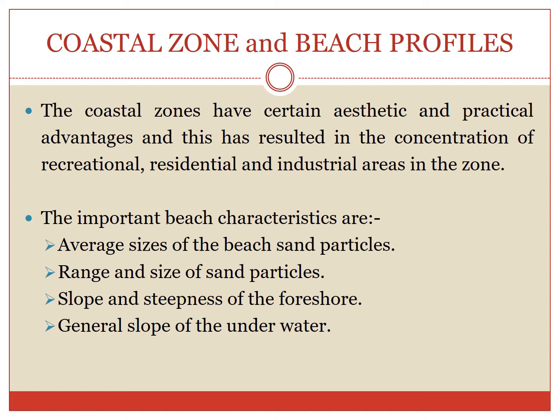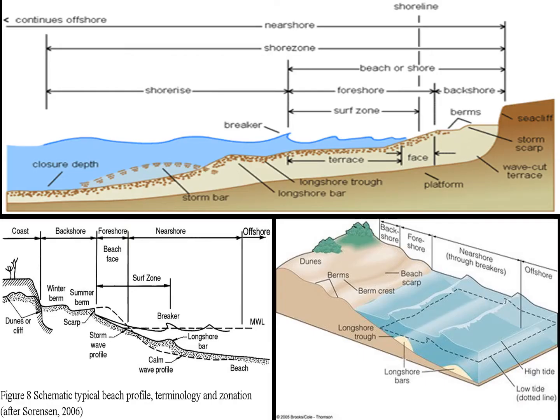Finer or smaller sizes of sand are found on the beaches where very gentle sloping of the foreshore is present. The larger the particles which constitute the beach, the steeper will be the slope of the beach. In this figure, the three views are showing one and the same beach profile but at different angles. Carefully learn about the properties and characteristics of these shores.